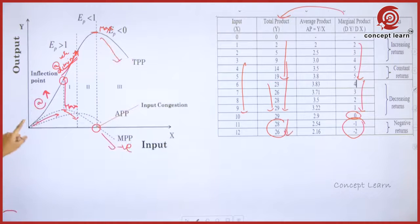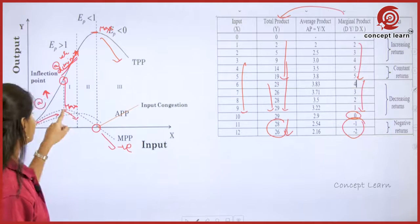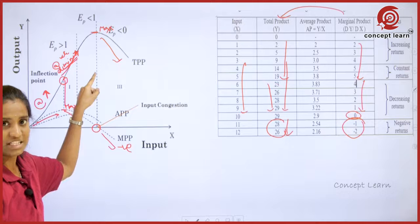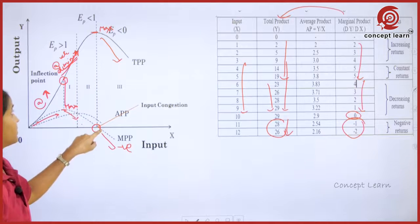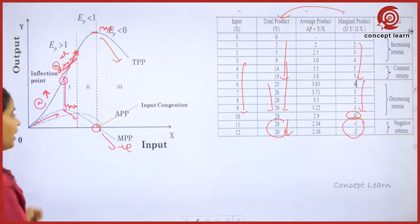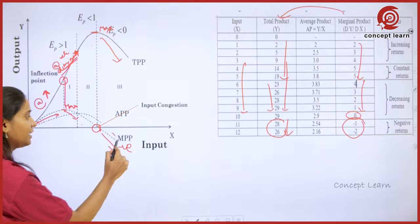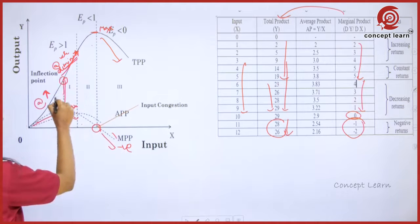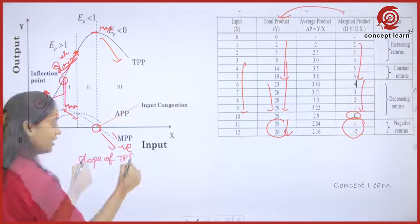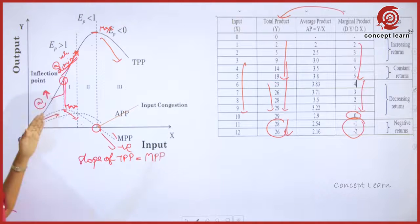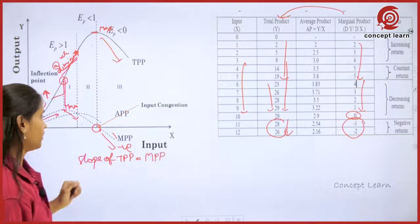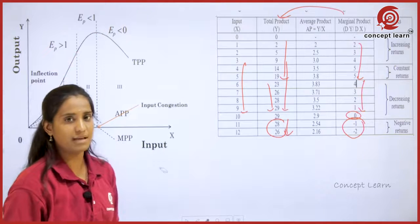So to summarize the TPP-MPP relationship: when MPP is increasing, TPP increases at the increasing rate; when MPP is declining, TPP still increases at a diminishing rate; when MPP is zero, TPP is maximum; and when MPP becomes negative, TPP also decreases. Therefore, the slope of TPP is nothing but MPP — the slope of TPP is reflected in MPP.